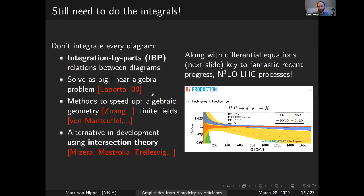With all this integration technology plus generalized unitarity, people have made fantastic progress. There are now three-loop LHC processes calculated — for example, Drell-Yan production. You can see on the plot that the leading-order piece looks very different from when you add next-to-leading order corrections. The plots show renormalization scale dependence — what you want is very little. As you go to higher order you eventually get a well-determined three-loop result that you can really match to LHC data and get useful information.